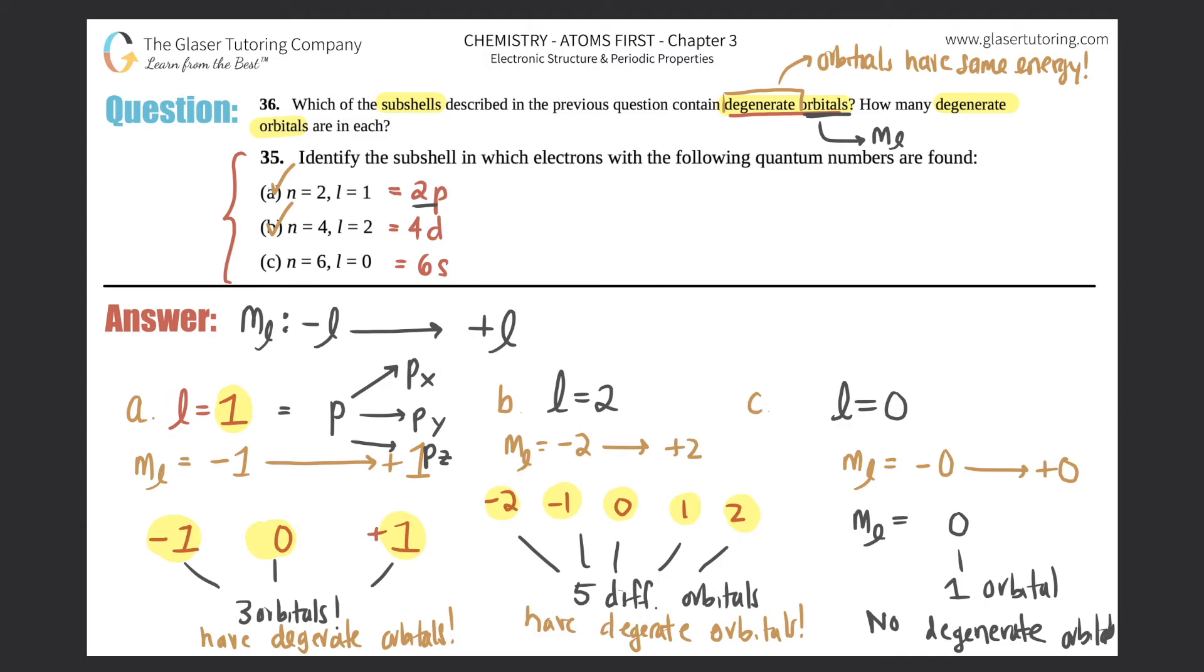So now we just need to know how many. We kind of answered this question because it just comes from how many numbers are in the ml. Since for a, there was three numbers, the answer would be three orbitals. Since for b, there was five different numbers, you would have five orbitals. And then for c, you only had one number, so you only have one orbital. So the first two, a and b, have degenerate orbitals. The third one does not. And then you have three orbitals, five orbitals, and one orbital.